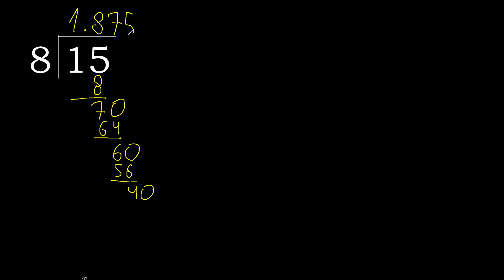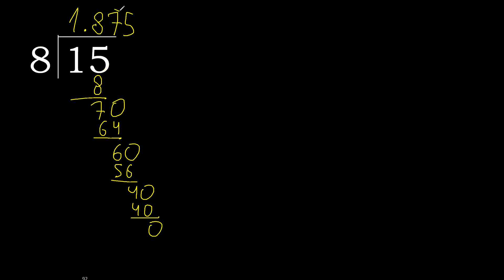8 multiplied by 5 is exactly 40. Subtract — remainder is 0. Therefore finish: 15 divided by 8 equals 1.875.